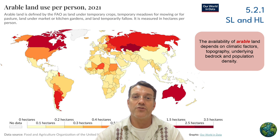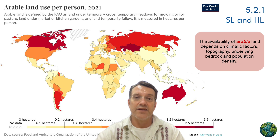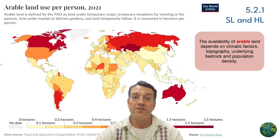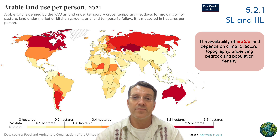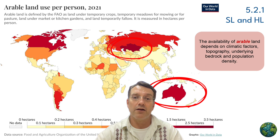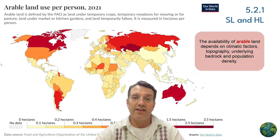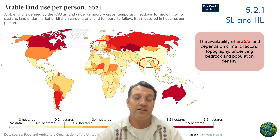Let's start by looking at this world map showing arable land per person. Notice how dramatically this varies across the globe. Arable land is farmable land — areas suitable for growing crops. The Food and Agriculture Organization defines it as land under temporary crops, meadows for mowing, market gardens, and temporarily fallow land. Countries like Australia and Kazakhstan show much higher arable land per person, while densely populated regions like Bangladesh and parts of Europe have much less available.